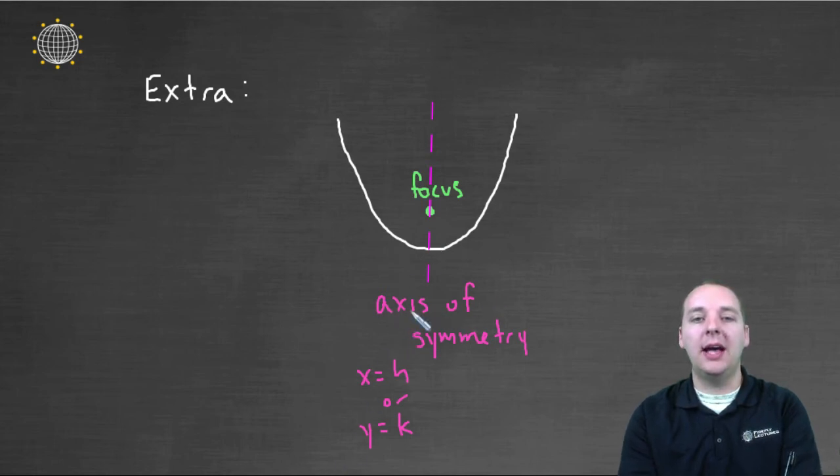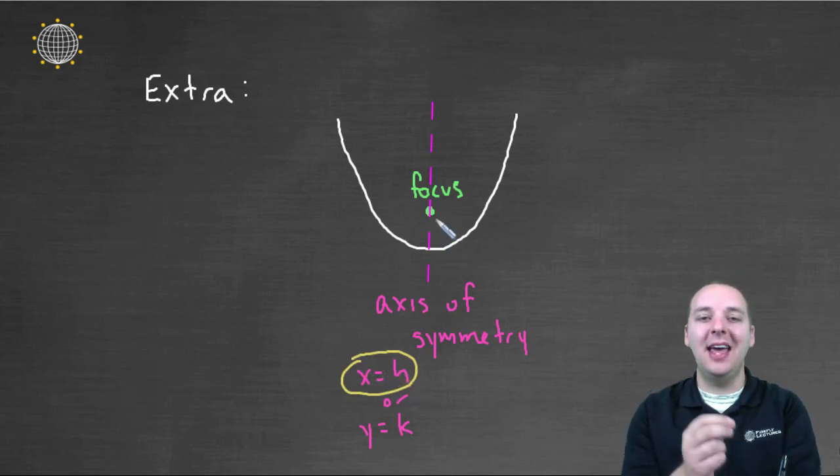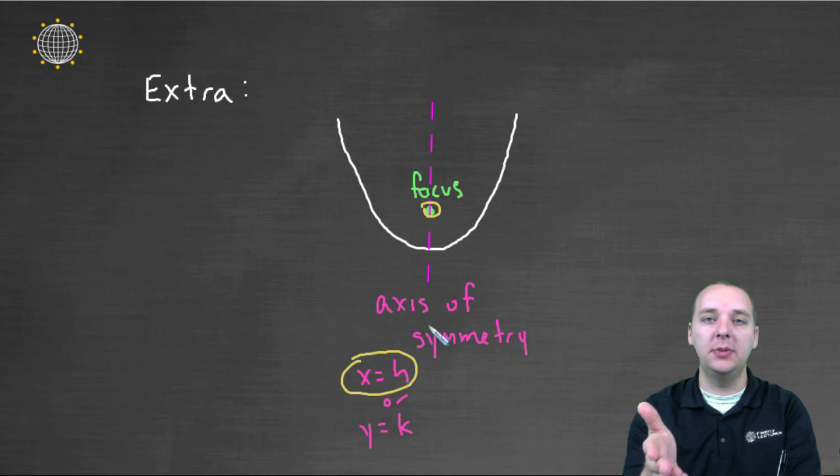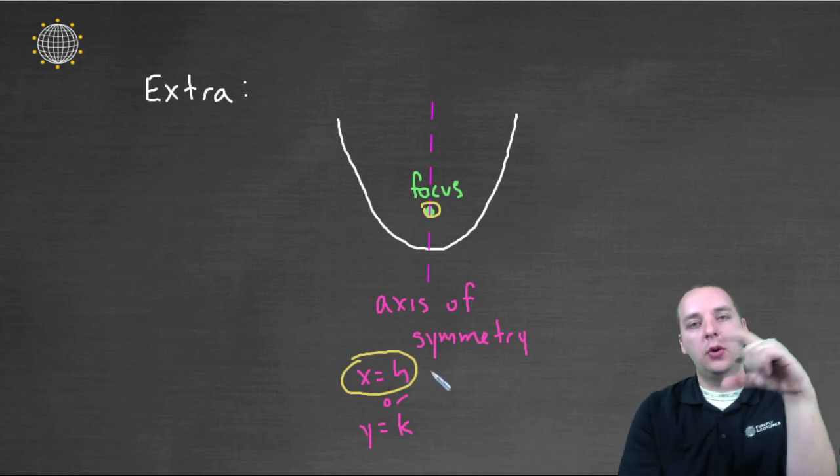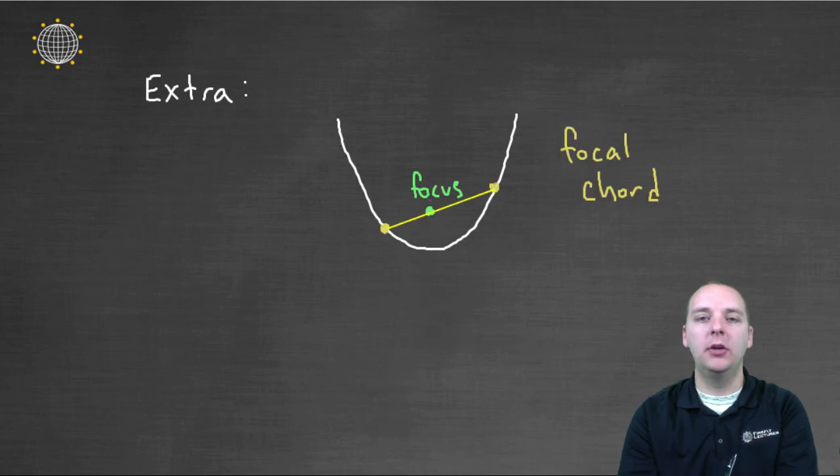So your axis of symmetry will either be X equals a constant. And you actually even know what the constant will be. It's the X coordinate of the focus, right? Because if this guy has an X value of H, the axis of symmetry would be X equals H. Or if it was opening left or right, it would be Y equals K would be the axis of symmetry. It would be a horizontal axis of symmetry. All right, two other quick things.